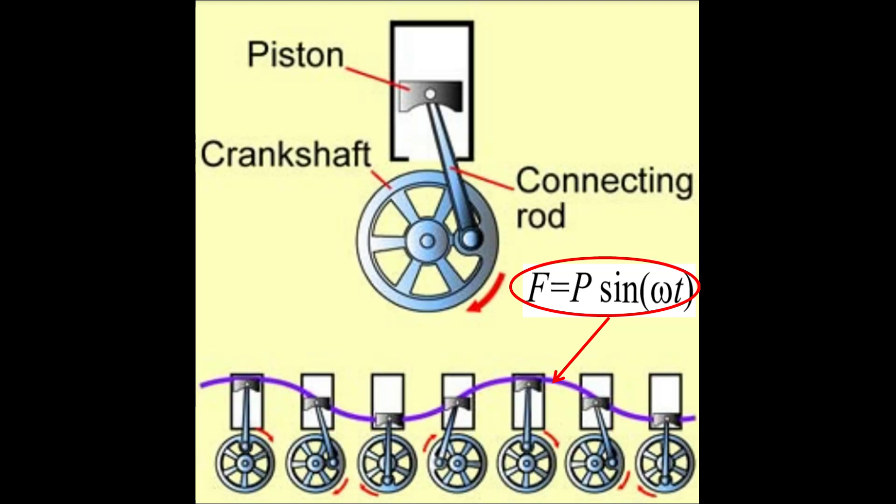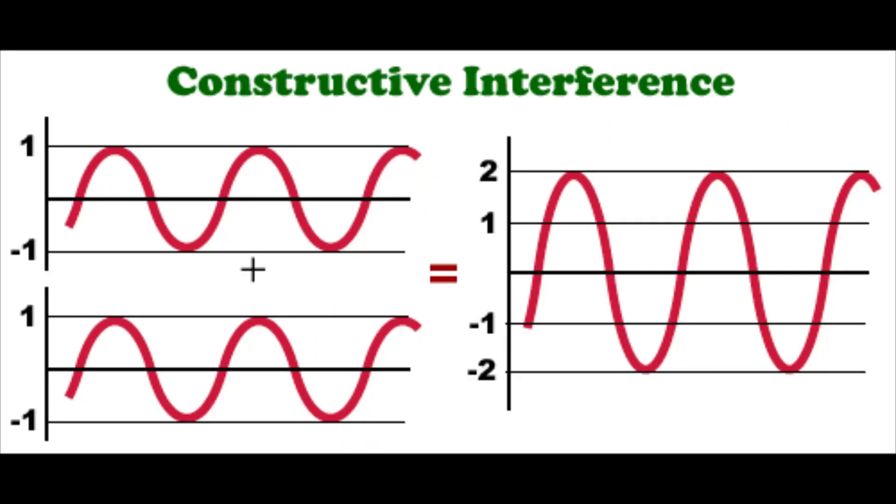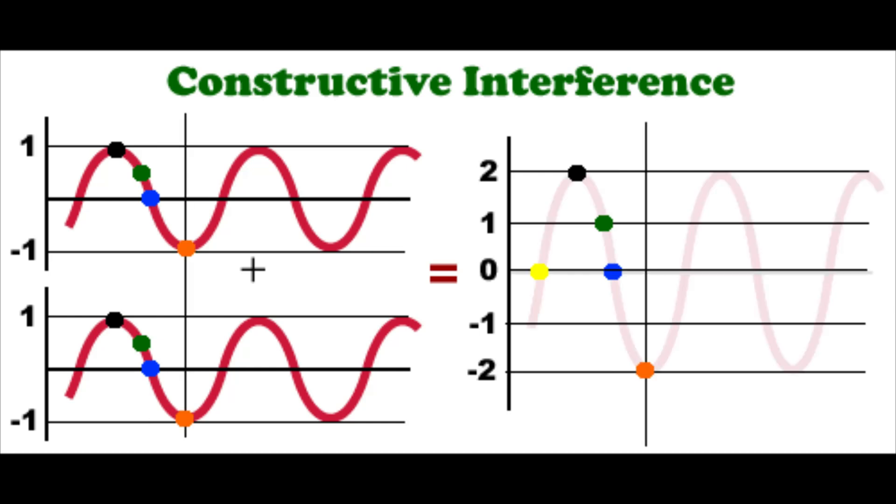Now we will try to understand what is happening at resonance. The maximum transfer of external energy to the vibrating system can occur at resonance. The basic principle behind the resonance is constructive interference. Whenever two waves of same frequency meet, the resultant wave will have higher amplitude, which is the sum of the individual waves' amplitude.